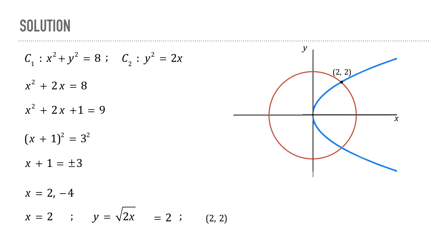We have to find out the slopes of the tangents at this point of intersection, and for that we need the derivatives of the two curves. Here is the equation of the first curve. Differentiating both sides with respect to x, we get 2x + 2yy' = 0, which simplifies to x + yy' = 0, and therefore y' = -x/y.